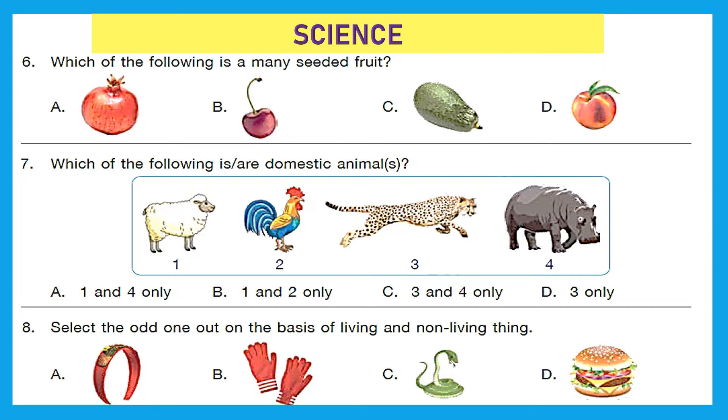Next section is science. Which of the following is a many seeded fruit? We have pomegranate, then cherry, then avocado and then we have peach. So out of this only pomegranate is many seeded fruit whereas all other are one seeded. So option A is the right answer. Question 7. Which of the following is our domestic animal or animals? First one is sheep, then we have hen, then we have cheetah and then we have rhinosaurus. So out of these sheep and hen are domestic animals whereas cheetah and rhinosaurus are wild animals. So for us answer should be option B that is 1 and 2 only.